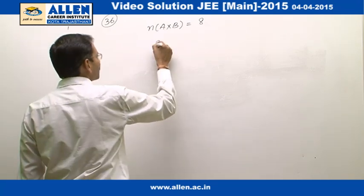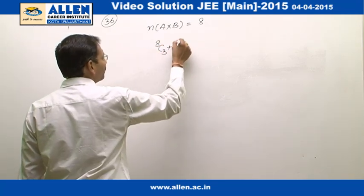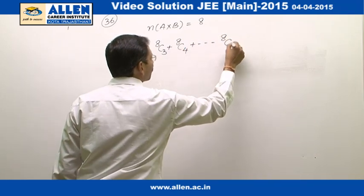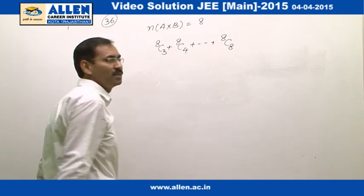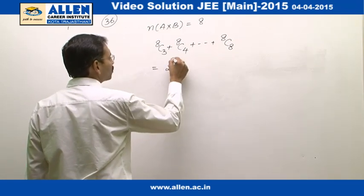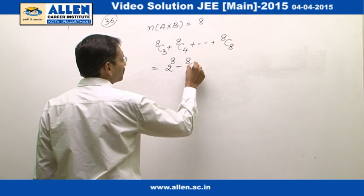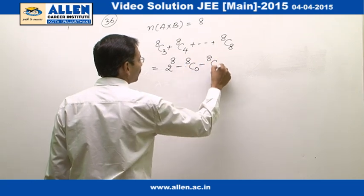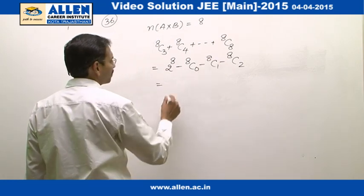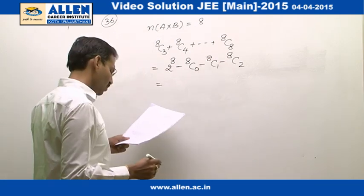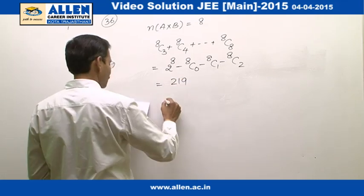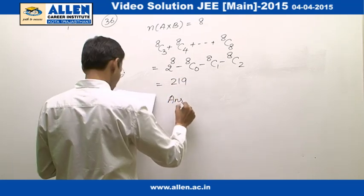The number of subsets having exactly 3 elements will be 8C3, exactly 4 is 8C4, and so on up to 8C8. This expression can be calculated as 2 raised to the power 8 minus 8C0 minus 8C1 minus 8C2, which finally gives us the value 219. So the right answer is option 3.